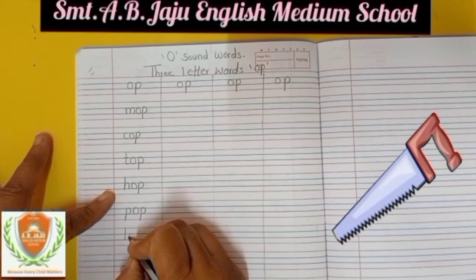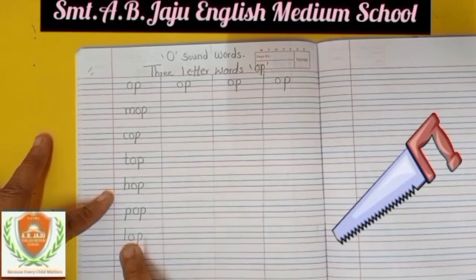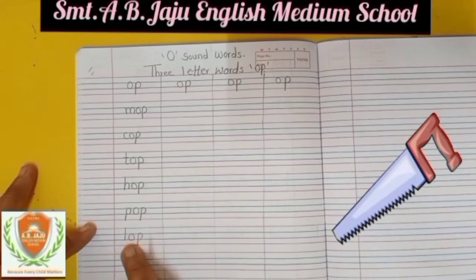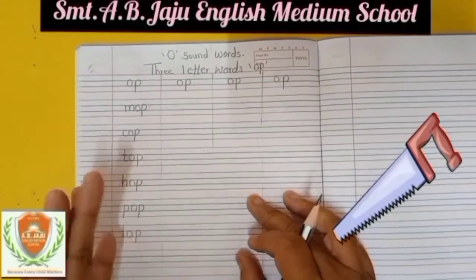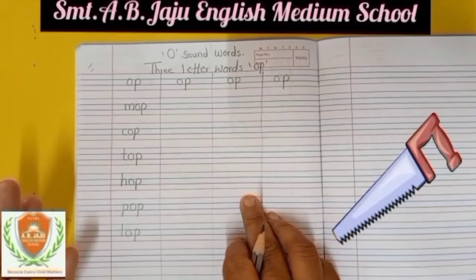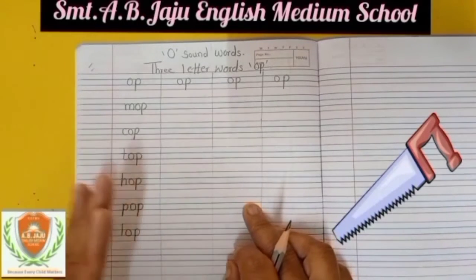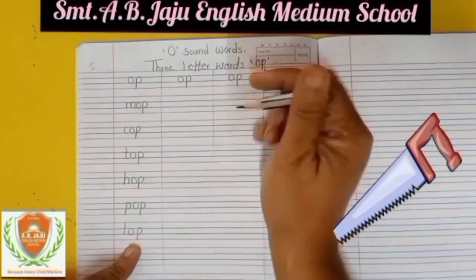Write small L, small O, small P. Sound of L is L, sound of O is O, sound of P is P — L-O-P, lop. Lop means to cut — like cutting the branches of trees or any wooden thing. That tool used for cutting is called lop.